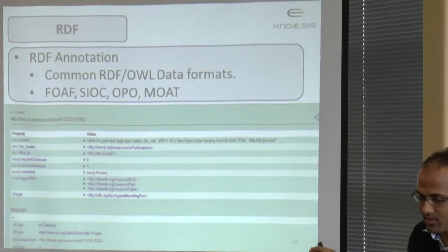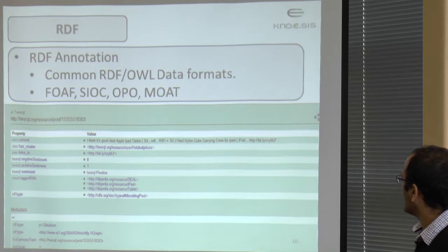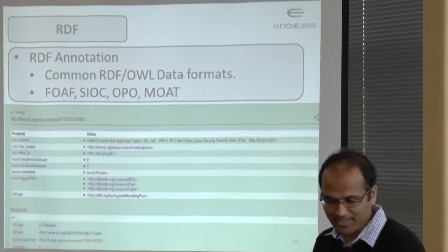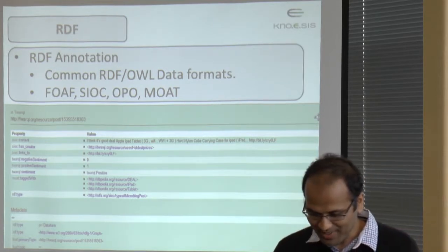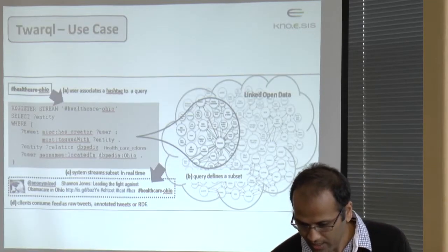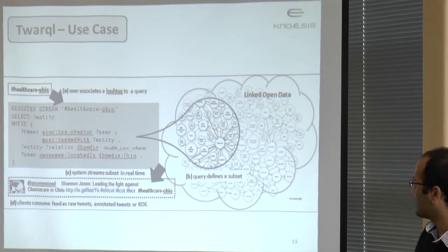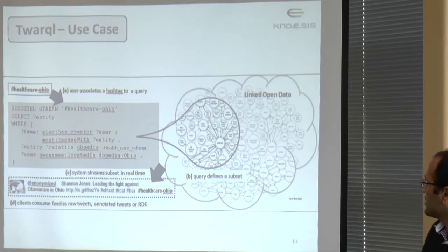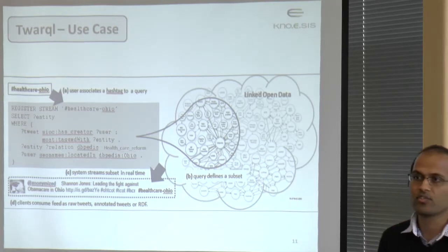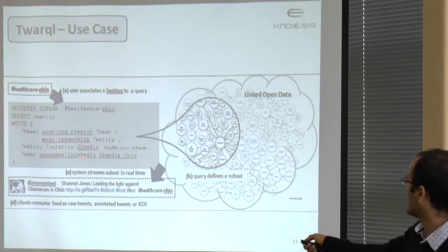For the RDF annotation process, we use FOAF, SIOC, OPO, and MOT. We annotate the whole tweets with their metadata. For filtering, you need to give some kind of a SPARQL query. For example, you can register a stream called 'Healthcare Ohio' and say: give me all the tweets from a particular user tagged with an entity related to healthcare. From one hop of that particular healthcare entity, it'll start providing tweets which mention all the entities within that hop from Ohio.